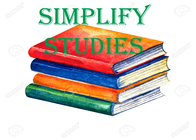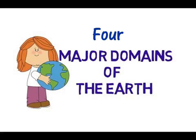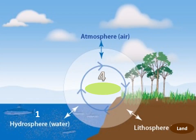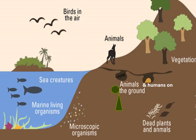Hello everyone, welcome to Simplify Studies. Today we will learn about the four domains of the earth. Children, water, air, land and all living things make up the four main domains of the earth. A domain is a region that has its own special features. The earth can be divided into four main domains.